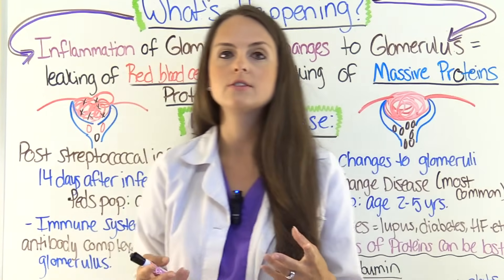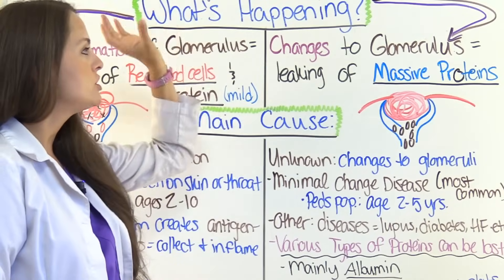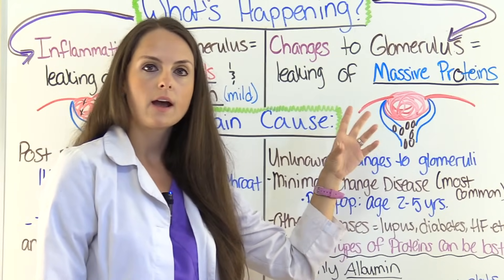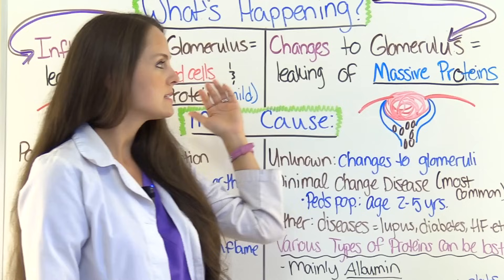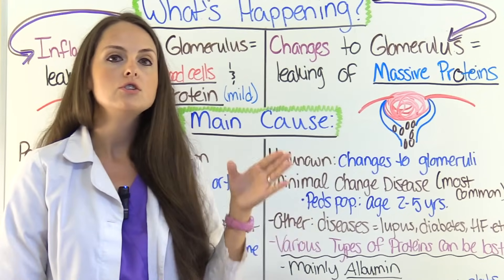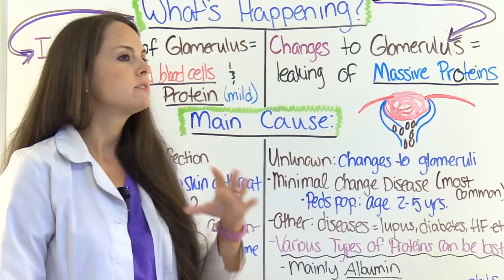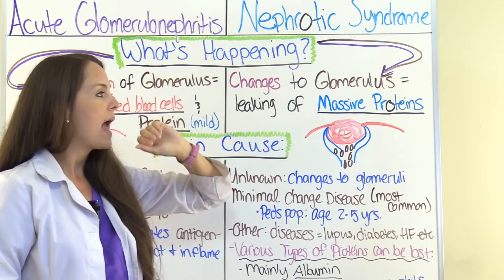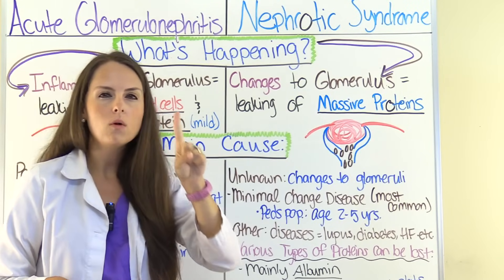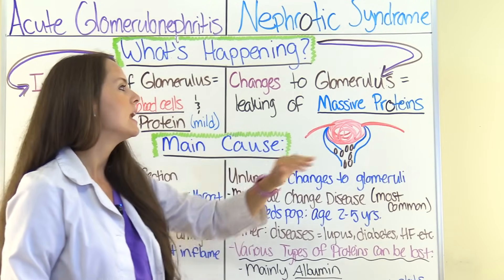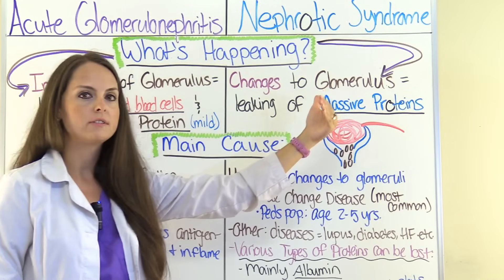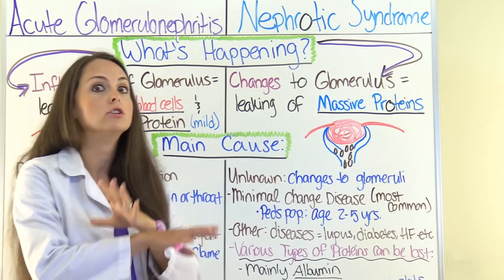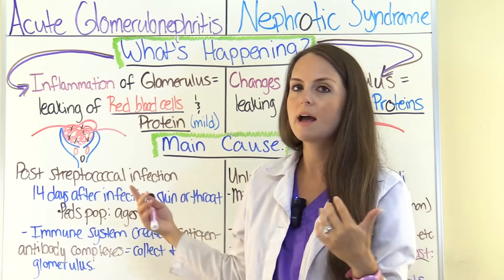With nephrotic syndrome, there are changes to the glomerulus so it is not working how it's supposed to, and it causes a massive amount of proteins to be lost. To help remember when comparing the two, nephrotic has an O in it, which is a reminder that there's only one substance lost in this condition — proteins. Red blood cells are not lost, only proteins, and it's a lot of them compared to the mild amount in acute glomerulonephritis.